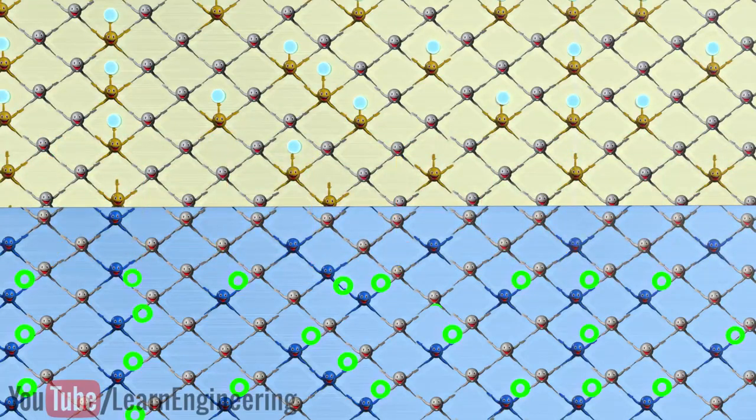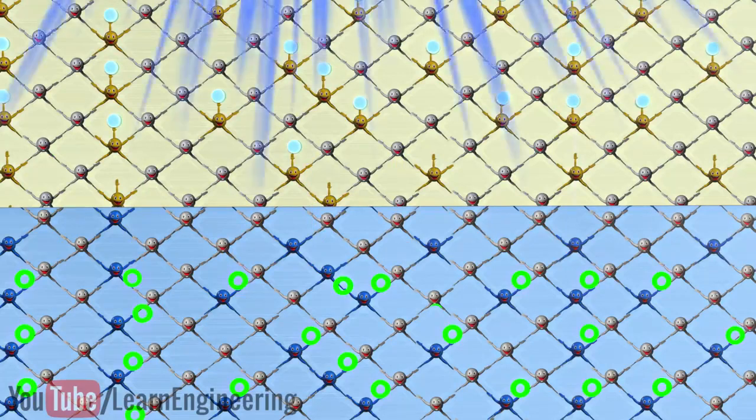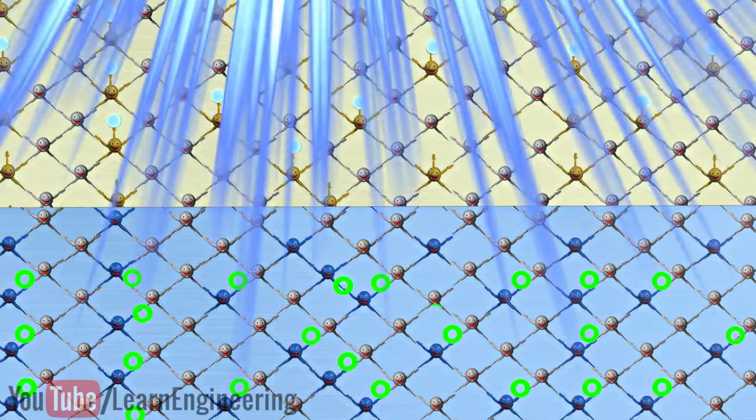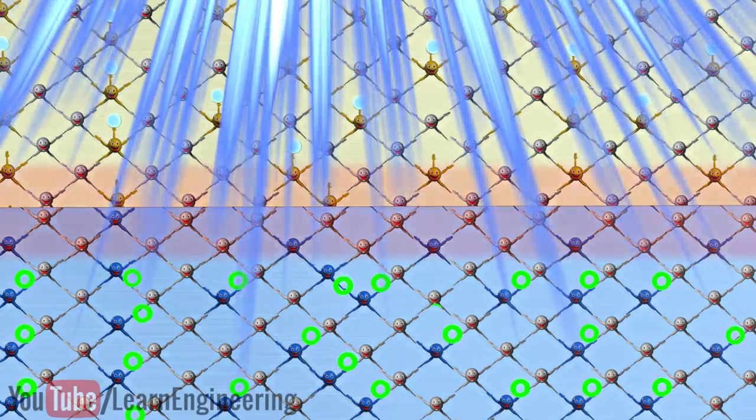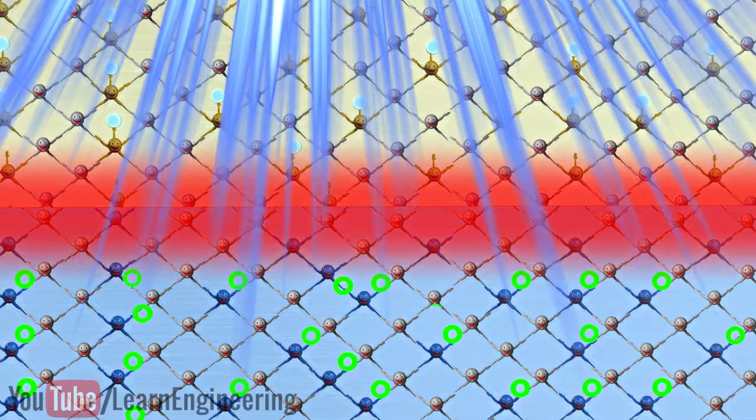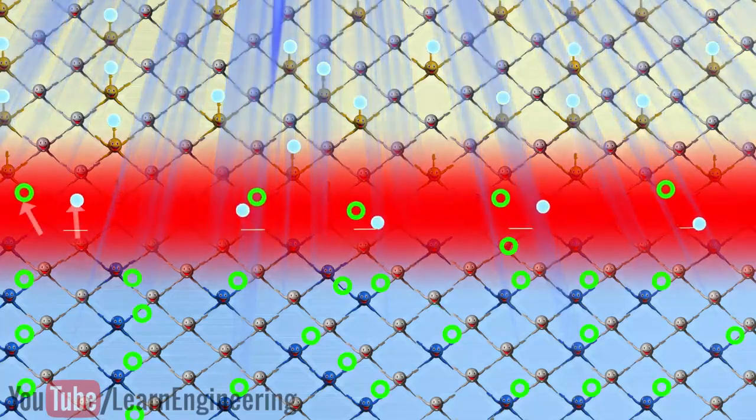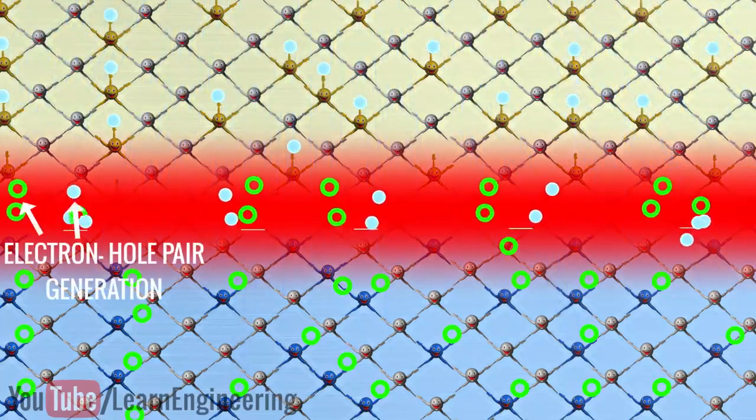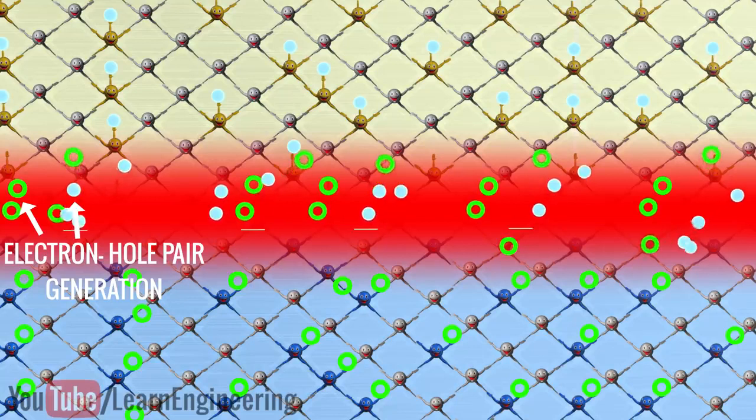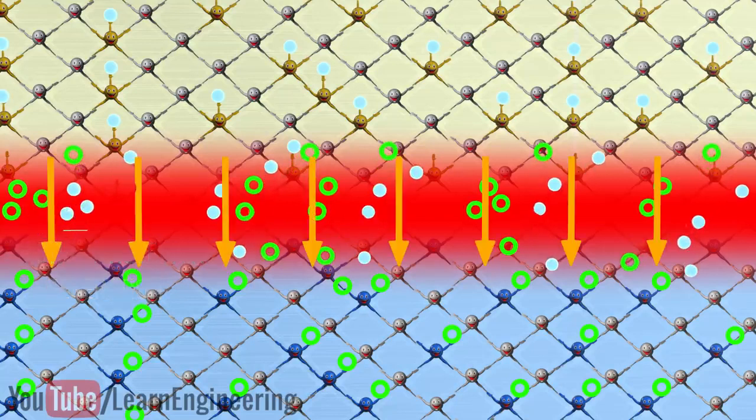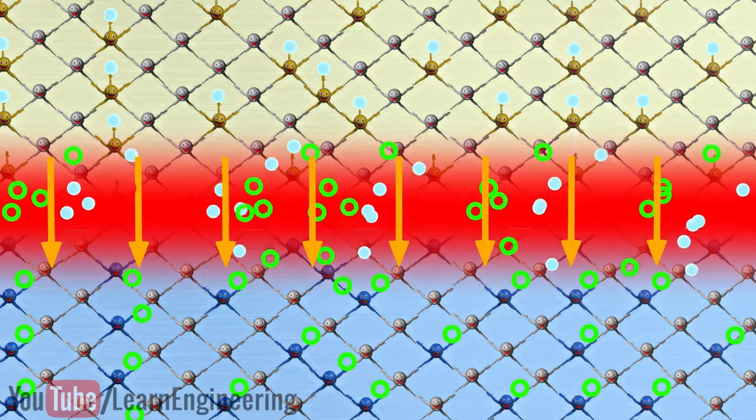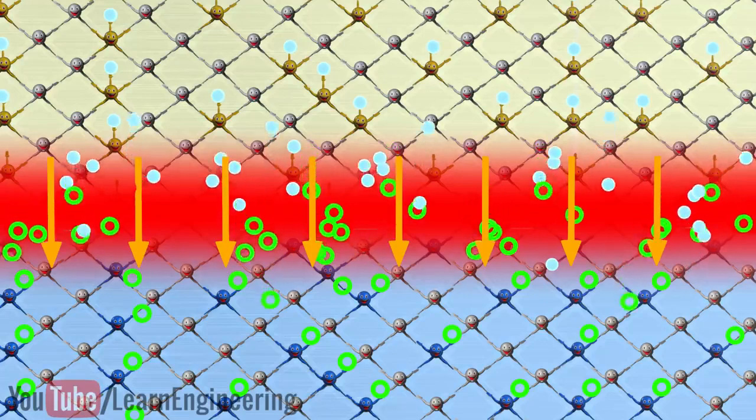When the light strikes the p-n junction, something very interesting happens. Light strikes the n-region of the PV cell and it penetrates and reaches up to the depletion region. This photon energy is sufficient to generate electron-hole pairs in the depletion region.